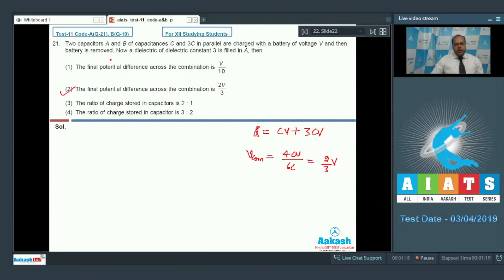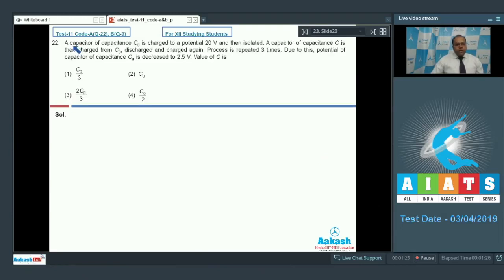Let's move to question number 22. In question number 22, a capacitor of capacitance C0 is charged to a potential 20V and then isolated. A capacitor of capacitance C is then charged from C0, discharged and charged again. Process is repeated 3 times.